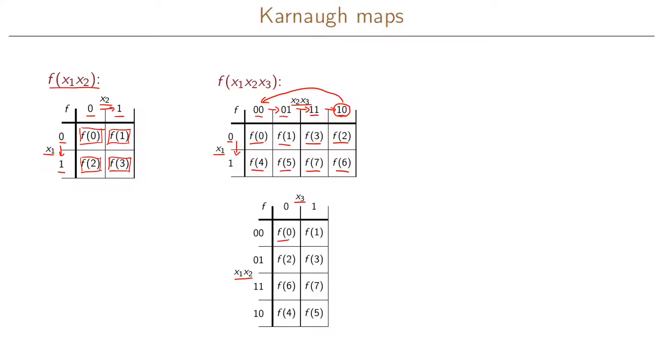And here you would just put f zero, f one, two, three, and then jump to the last row for four and five. And then you go back to the second last row for six and seven because you have one one here because of our Gray coding in this dimension here.